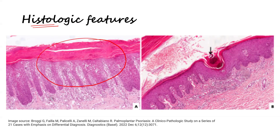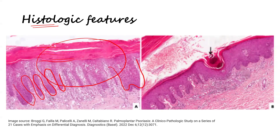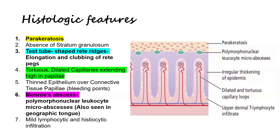Coming to the histopathological features: looking at the diagram, there is an abnormal thickening of the epidermis and dermis. The stratum corneum is very thick, the stratum granulosum is almost absent, and the rete ridges are elongated and clubbed, appearing to join each other. There is also the presence of micro-abscesses — collections of inflammatory cells in the stratum corneum.